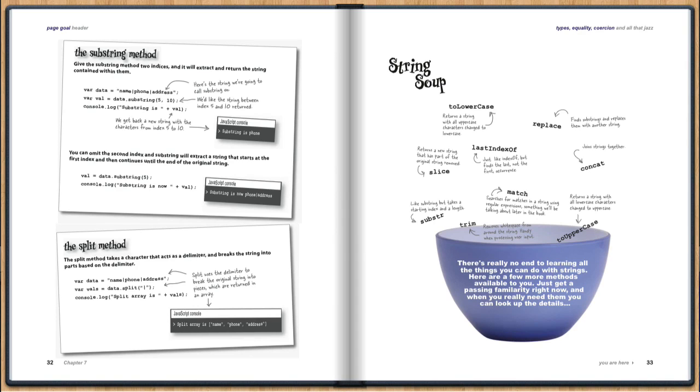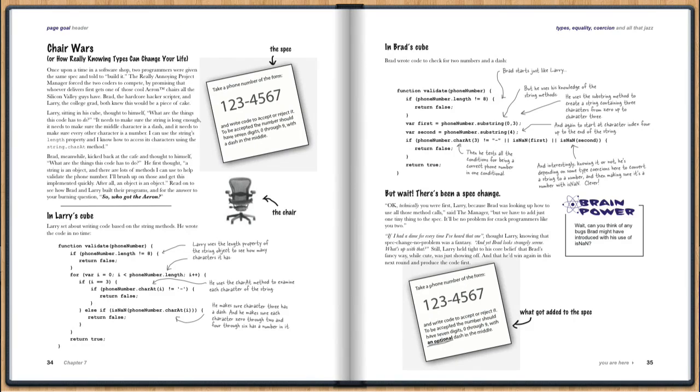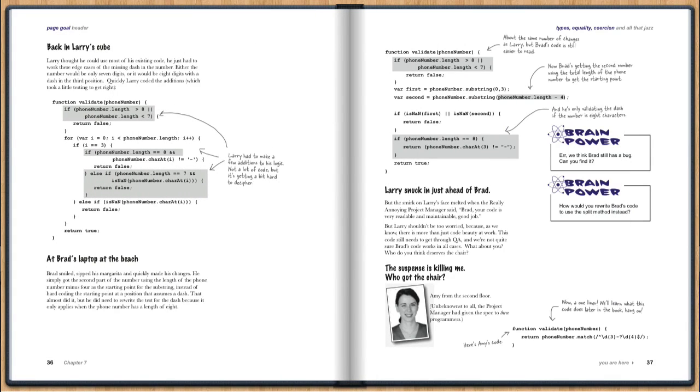Now, we wrap up the chapter with something called Chair Wars. And Chair Wars is really a bit of a story about two developers who are put up head-to-head to develop something in competition with each other. And we're just going to walk through what goes on, how it happens, what their different techniques are, and what their final outcome is. And I won't ruin the surprise ending for you.